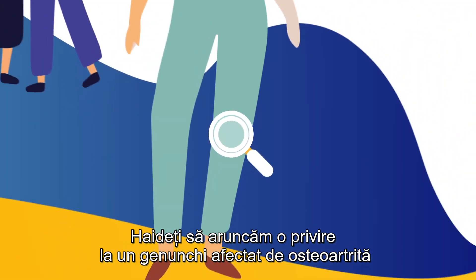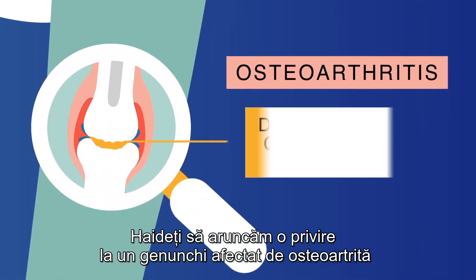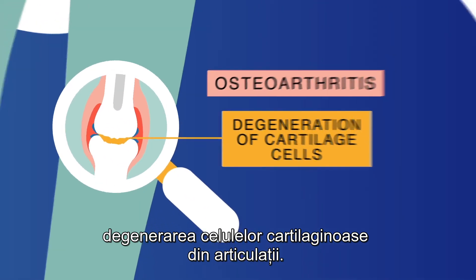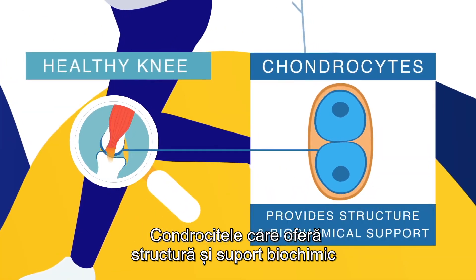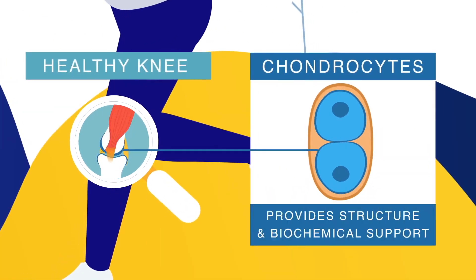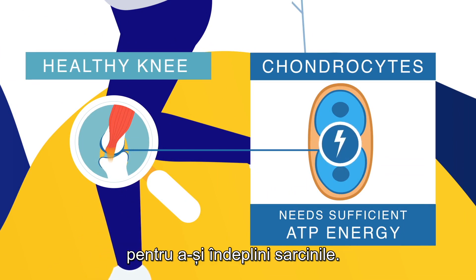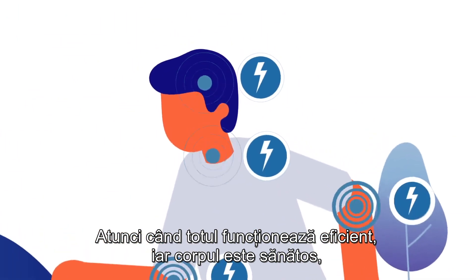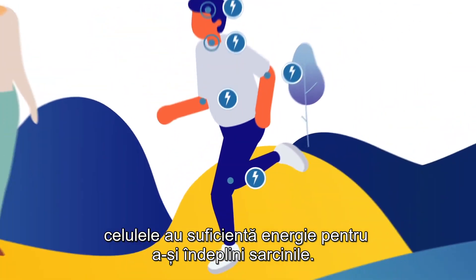Let's take a look at a knee affected by osteoarthritis. Osteoarthritis is the degeneration of cartilage cells within a joint. The chondrocytes, which provide structure and biochemical support for the cell, need sufficient ATP energy to fulfill their tasks. ATP is the fuel of the body cells. When everything is working effectively and the body is healthy, the cells have enough energy to perform their tasks.